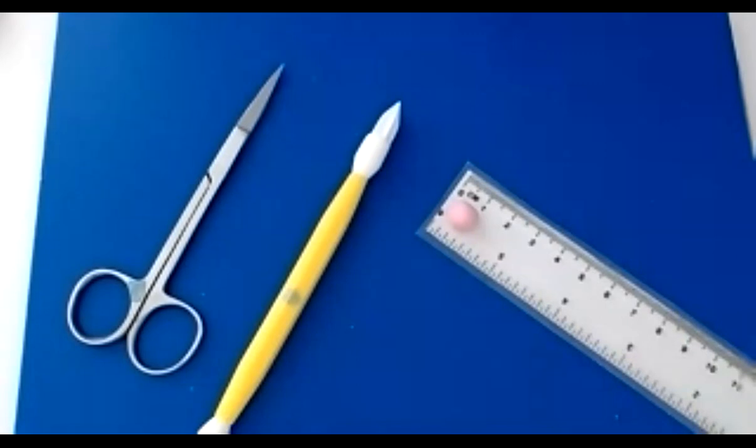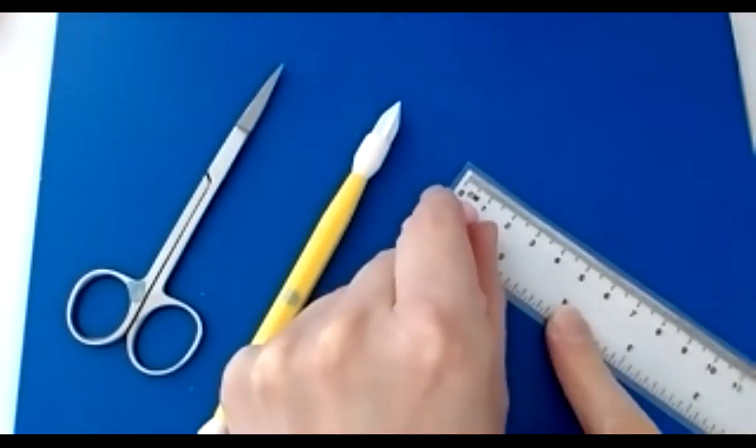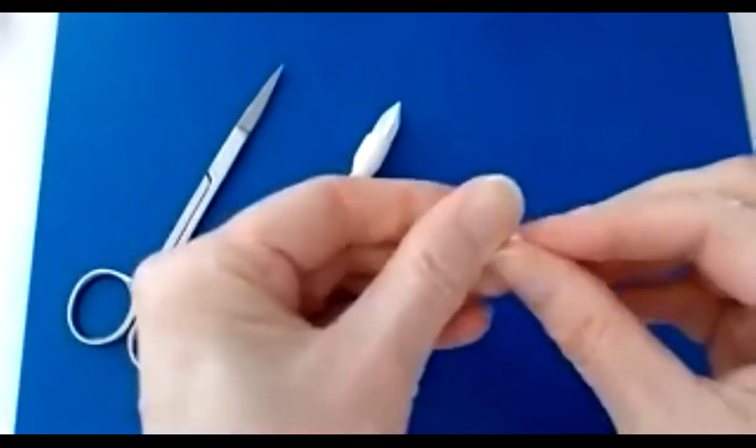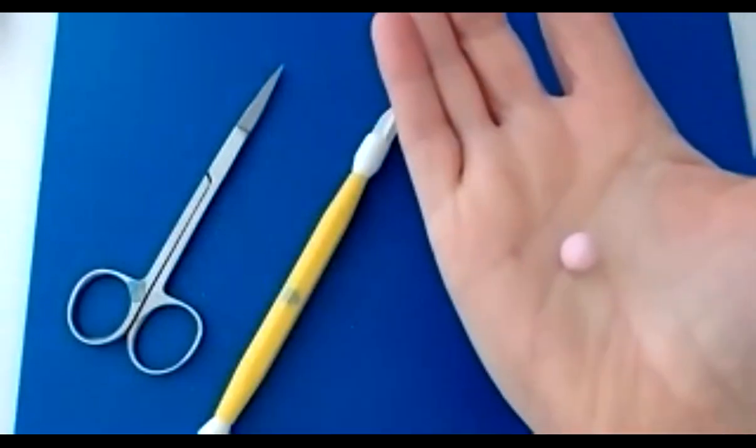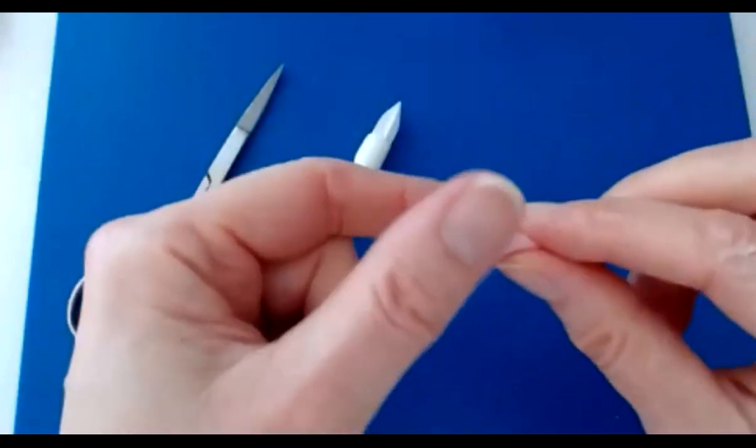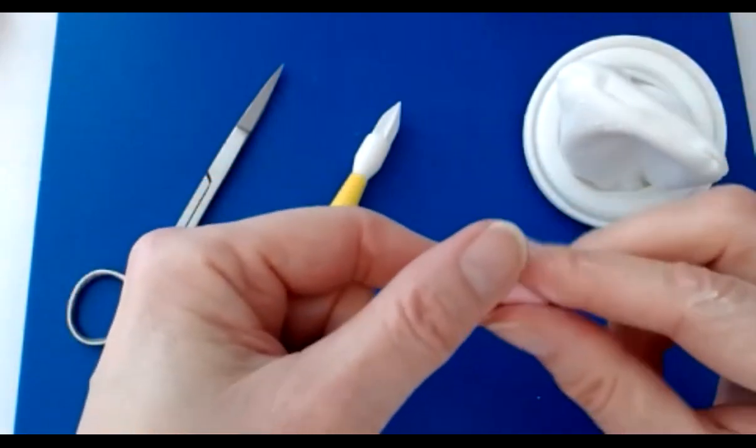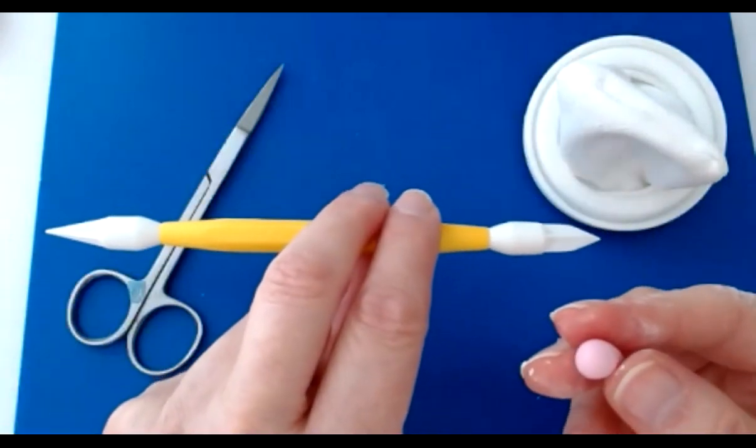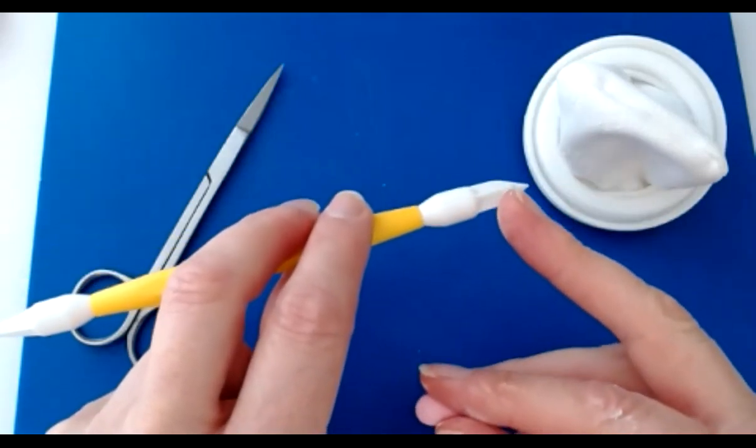So the next step is to make the blossom itself. I have a ball of flower paste about a centimeter in diameter. Give that a good warm up, make sure there are no cracks, and then pinch out a point on one end. If you feel your paste is sticky then use cornflour.